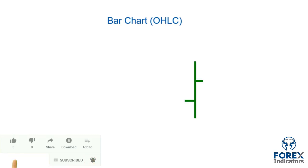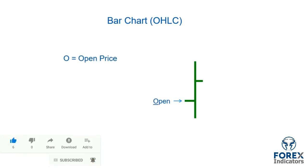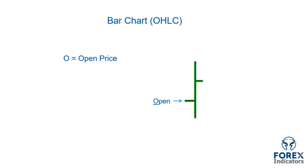The O represents the open price. This level represents the first tick on the bar of the timeframe that it represents. If you are looking at a one hour bar, the open would be the first up or down tick in that one hour period. This level can always be identified by the small handle, which is always on the left-hand side of the bar.